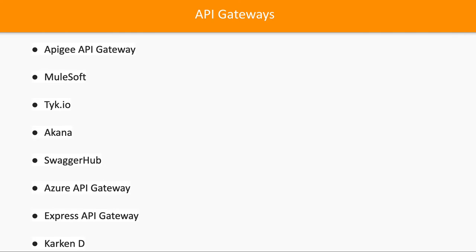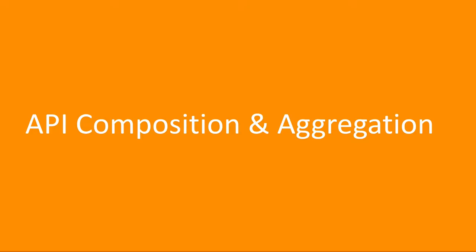Other API Gateway implementations include HAPDIS API Gateway, Mewsoft, Swagger Hub, Azure API Gateway, and Express API Gateway. All of these are available and you can choose whichever you want. I commonly use AWS and Azure API Gateway, which are easy to implement through their consoles.